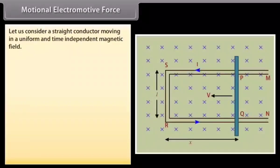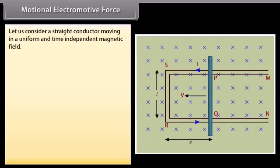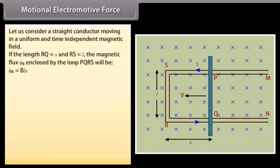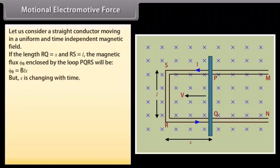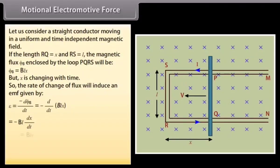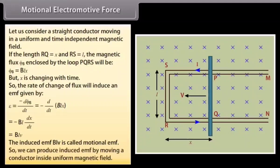Consider a straight conductor moving in a uniform and time-independent magnetic field. Let a rectangular conductor PQRS in which the conductor PQ is free to move. The rod PQ is moved with a constant velocity V in a uniform magnetic field B perpendicular to the plane of this system. If the length RQ is X and RS is L, the magnetic flux Phi_B enclosed by the loop PQRS equals BLX. Since X changes with time, the rate of change of flux induces an EMF given by minus d(BLX)/dt, which equals BLV. The induced EMF BLV is called motional EMF. We can produce induced EMF by moving a conductor inside a uniform magnetic field.